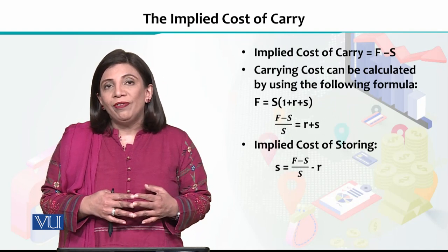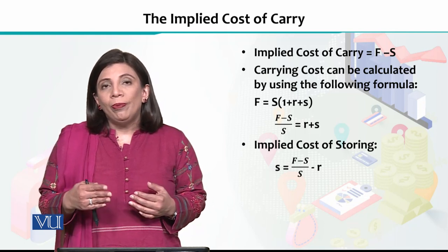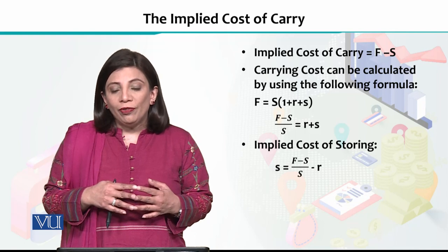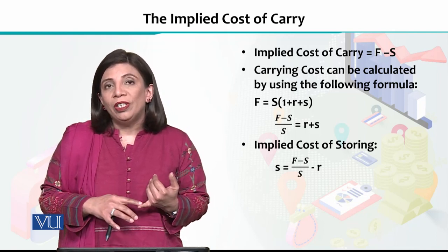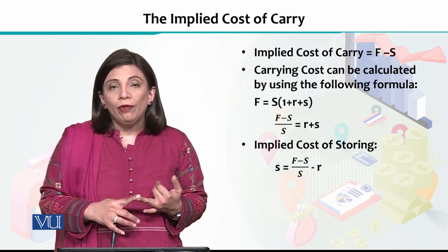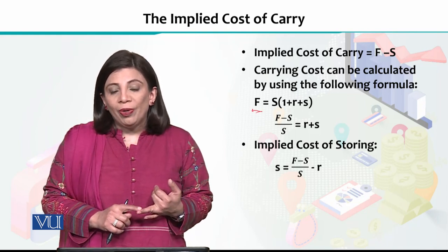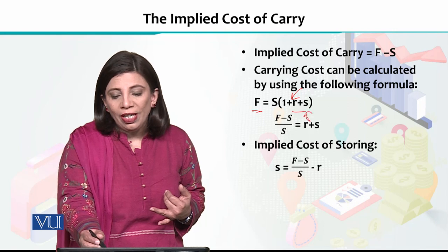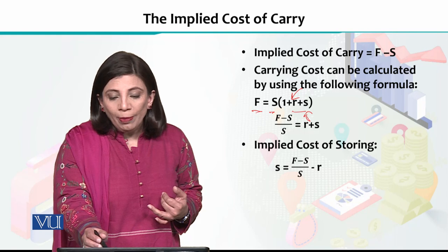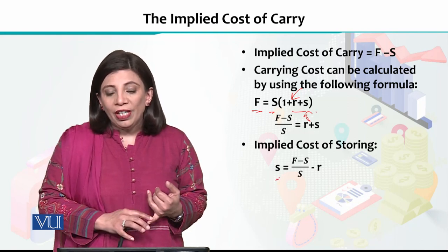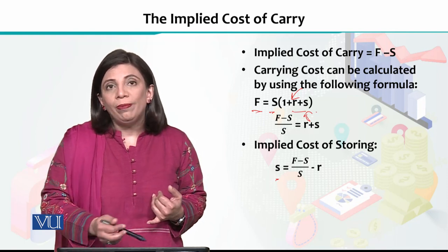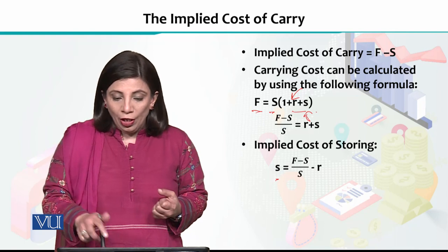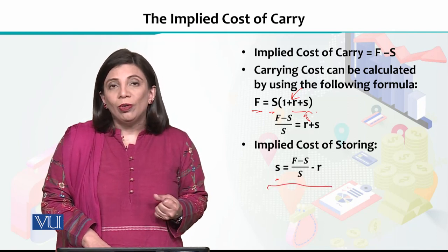The implied cost of carry can be calculated using a simple formula: we subtract the spot price from the forward price. If we also account for interest rates and storage costs, the forward price equals the spot price multiplied by (1 + r + s), where r is the risk-free interest rate and s is the storage cost. Solving for s, the implied storage cost equals the forward price minus the spot price, divided by the spot price, minus the risk-free interest rate.